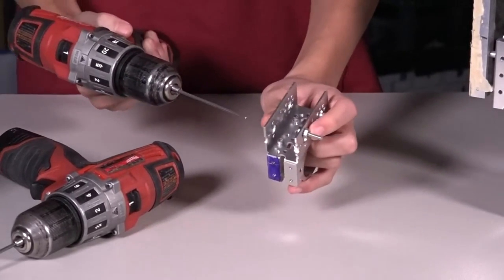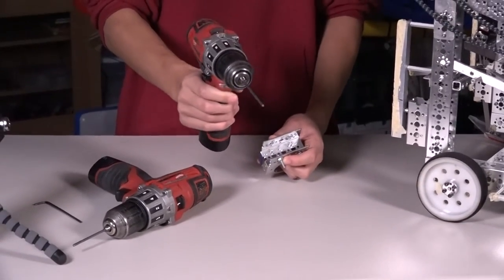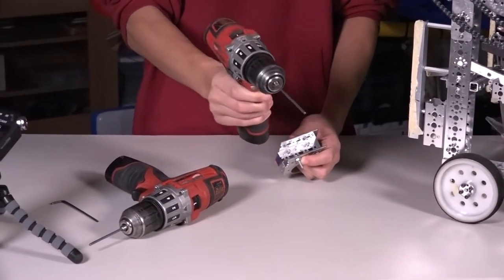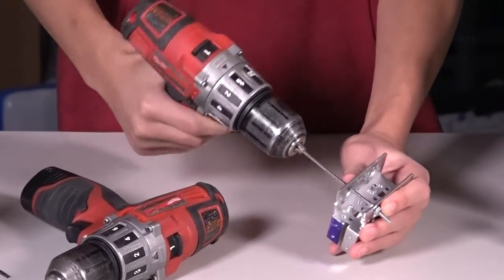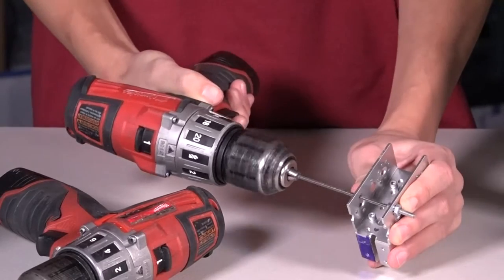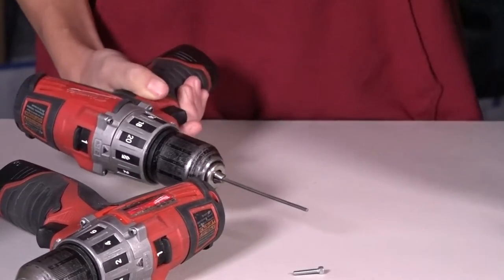Why don't we just go through this channel here and demonstrate. Always make sure you're turning it the right side. This is tightening but we want to loosen it, so flip the switch and now you're loosening. Let's stick it in. And there we go, it's out.